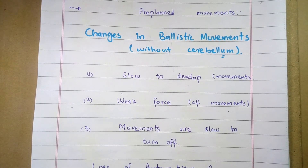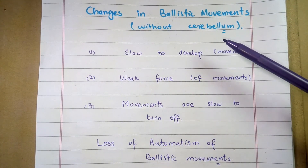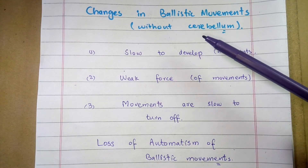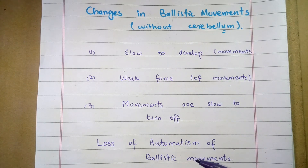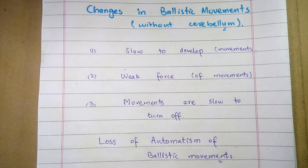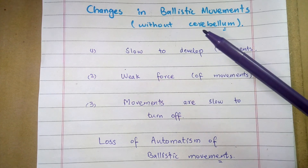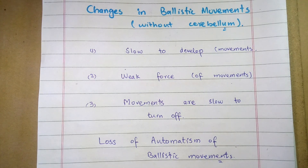Therefore, in the absence of the cerebellar cortex, the motor cortex has to think extra hard to turn ballistic movements on, and again has to think hard and take extra time to turn the movements off. Thus the automatism of the ballistic movements is lost due to the absence of the cerebellum. These are the major changes of ballistic movements when the cerebellum is absent. Thank you very much.